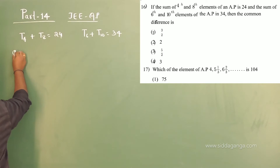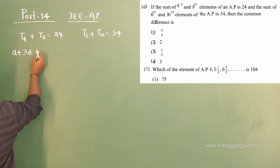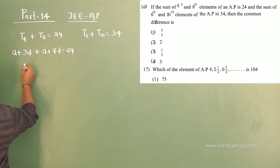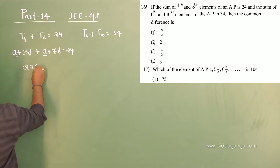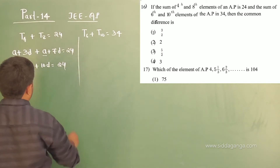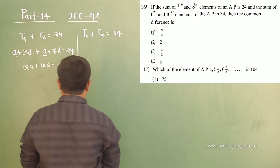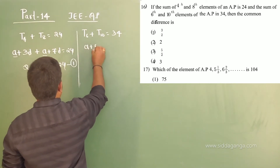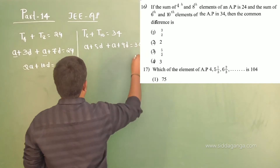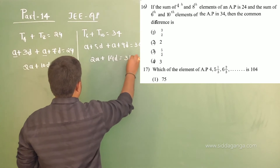What is a4? The 4th term is a plus 3d, where a is the first term and d is the common difference. The 8th term is a plus 7d. So a plus 3d plus a plus 7d equals 24, giving 2a plus 10d equals 24. Take this as equation 1. For equation 2: t6 = a plus 5d, t10 = a plus 9d, so 2a plus 14d equals 34.